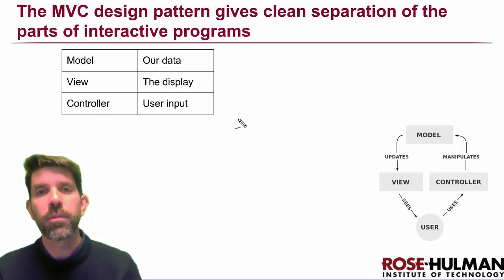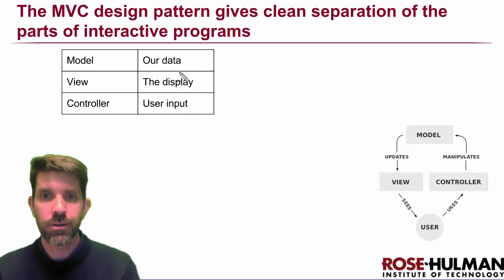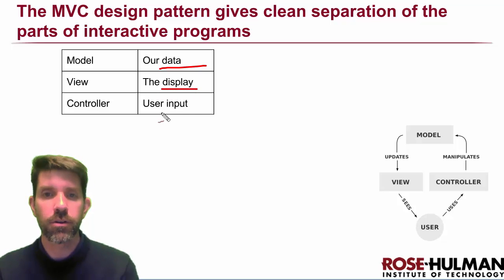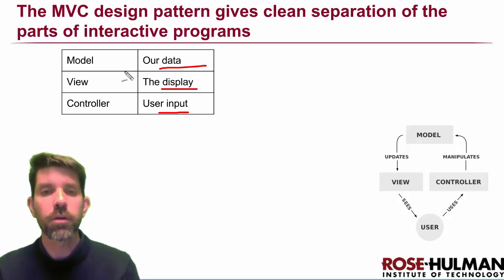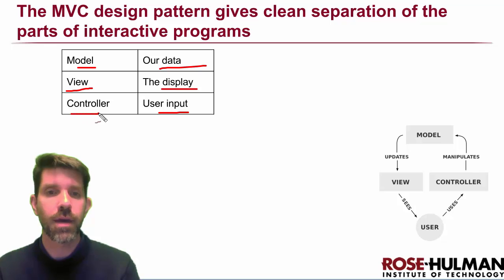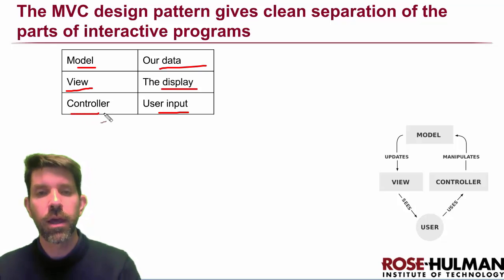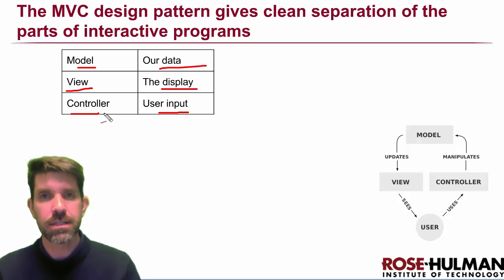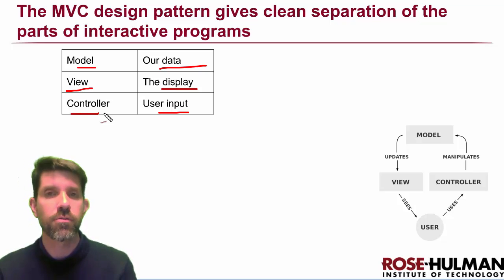Any interactive program that you make is going to have three parts. You're going to have some data, you're going to have a way to view it, and then you're going to have a way to interact with it. In a model view controller, we just use those exact names. So the data is called the model, the display is the view, and how we interact with it is called our controller. And what the pattern says is that to the extent that you can, you're going to separate these three things out into different chunks.